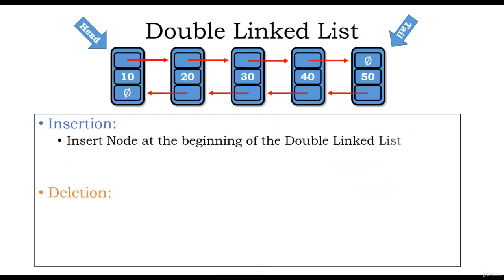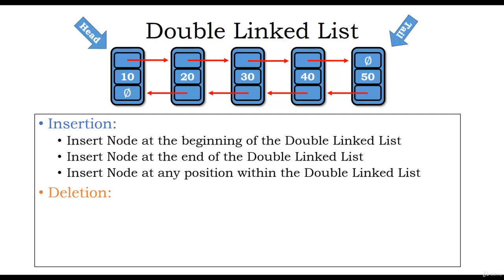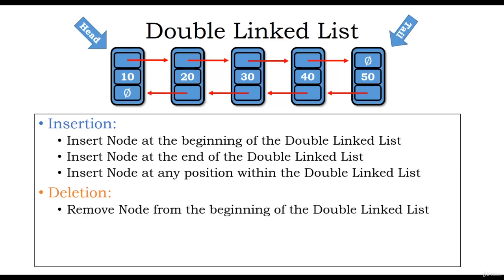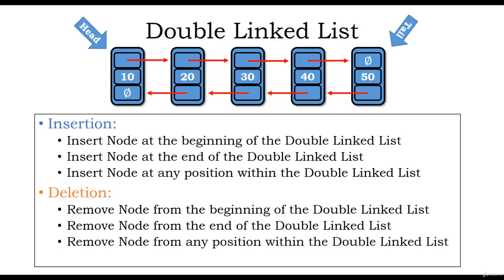In a doubly linked list, we have insertion and deletion operations. Insertion can be performed at the beginning, at the end, or at any position within the list. Similarly, deletion can be performed at the beginning, at the end, or from any position within the list.